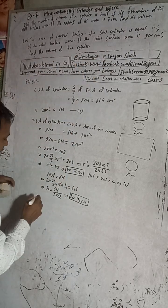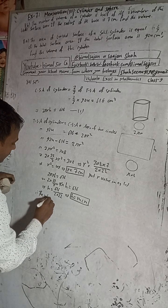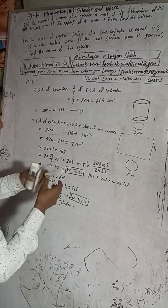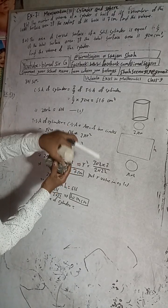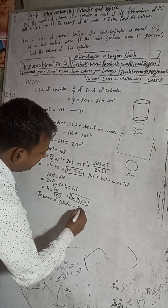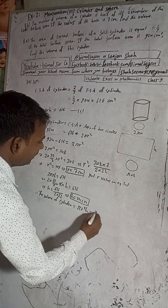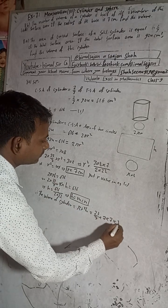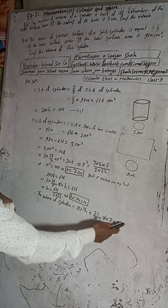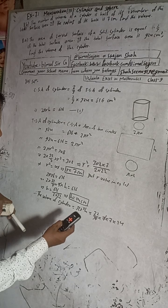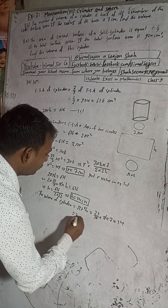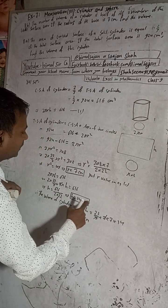Now that we have r = 7 cm and h = 14 cm, we can find the volume of the cylinder. Volume = πr²h = (22/7) × 7² × 14 = (22/7) × 49 × 14. Cancelling 7s: 22 × 7 × 14 = 2156 cm³. The volume of the cylinder is 2156 cm³.